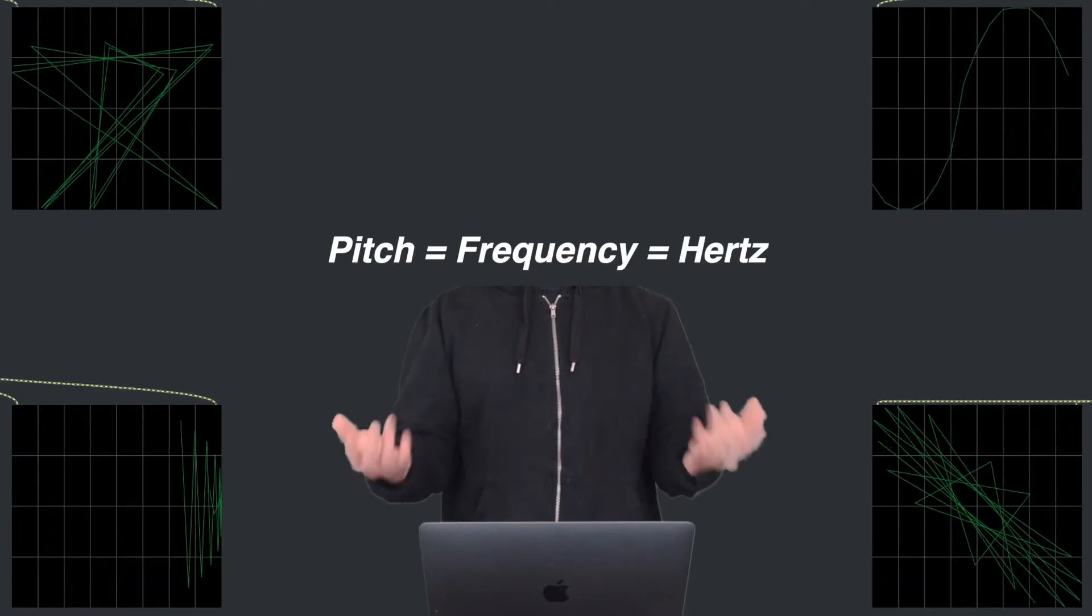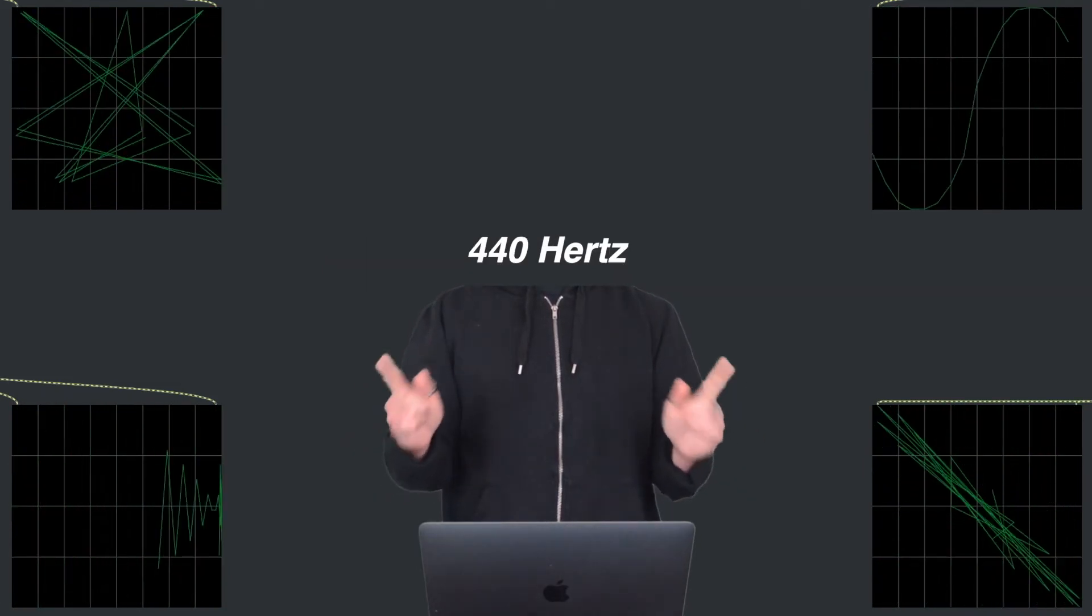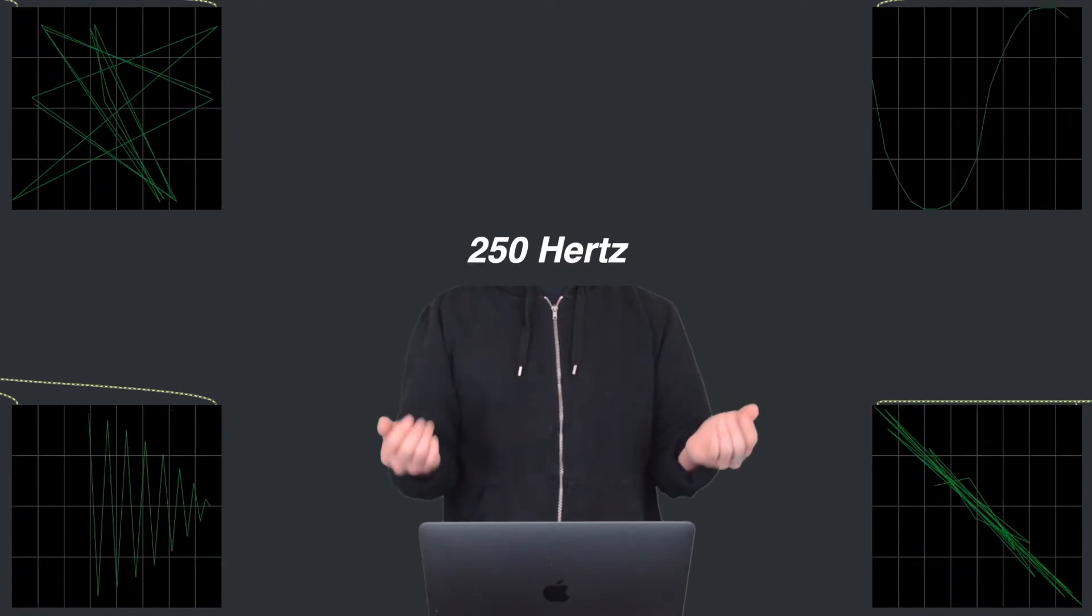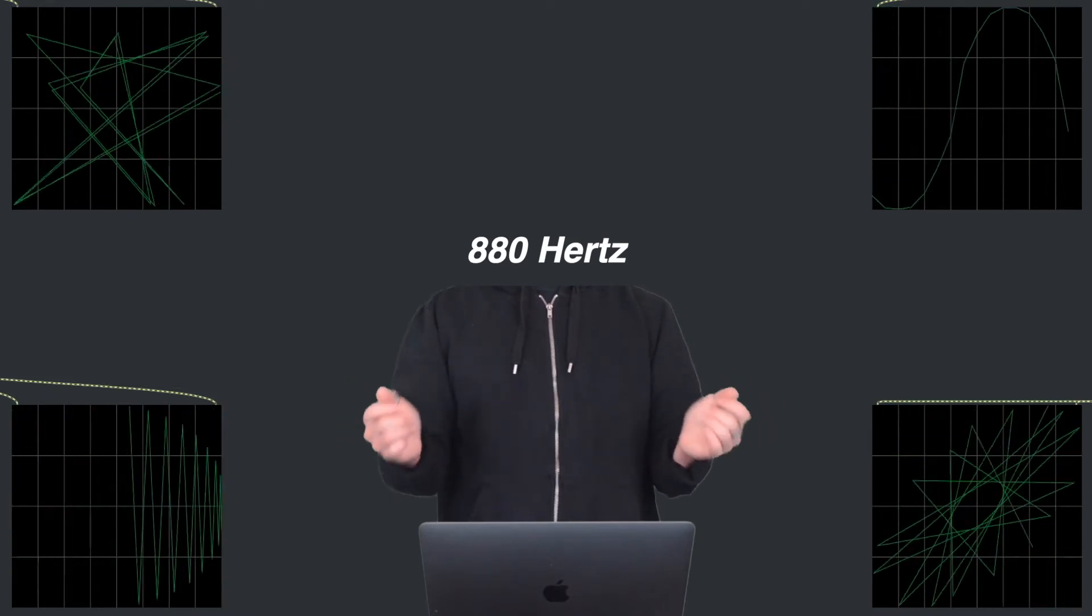The pitch or frequency of a sine tone can be described using hertz. This is 440 hertz. This is 250 hertz, which sounds bassier. And this is 880 hertz.